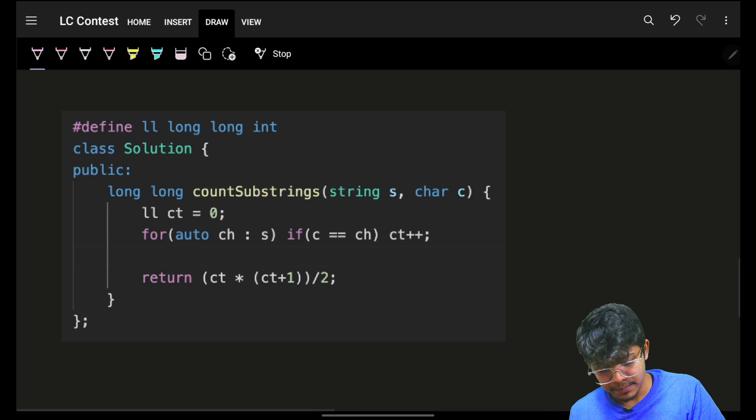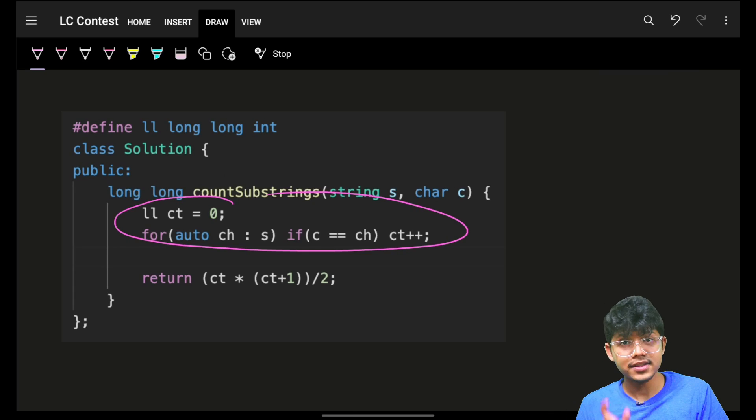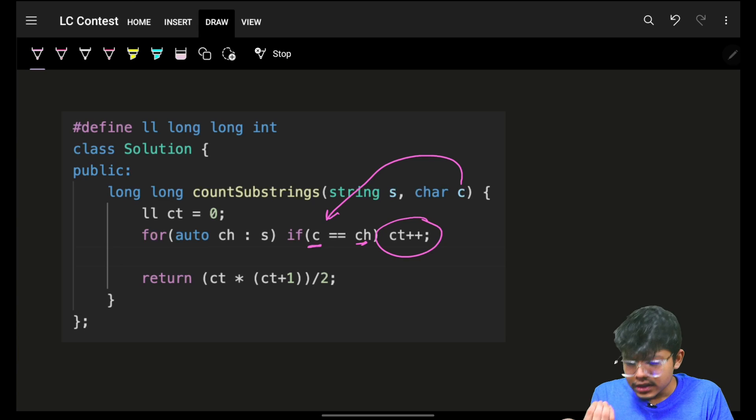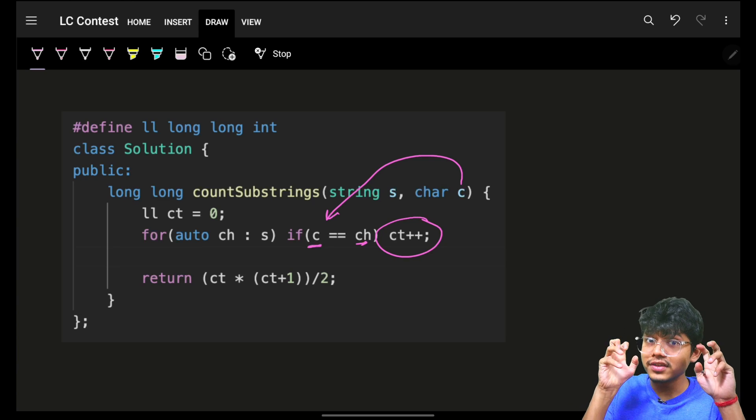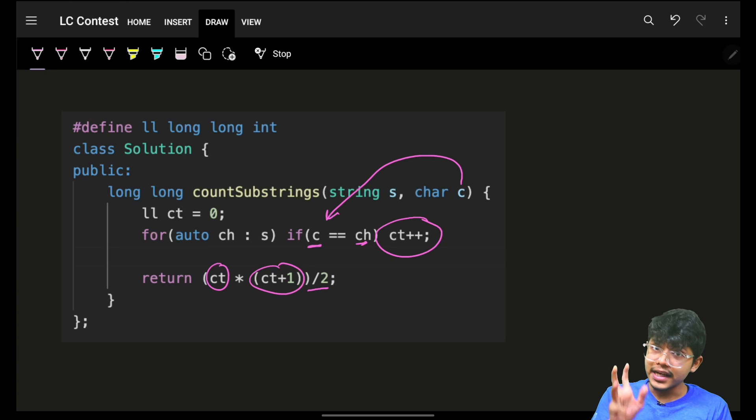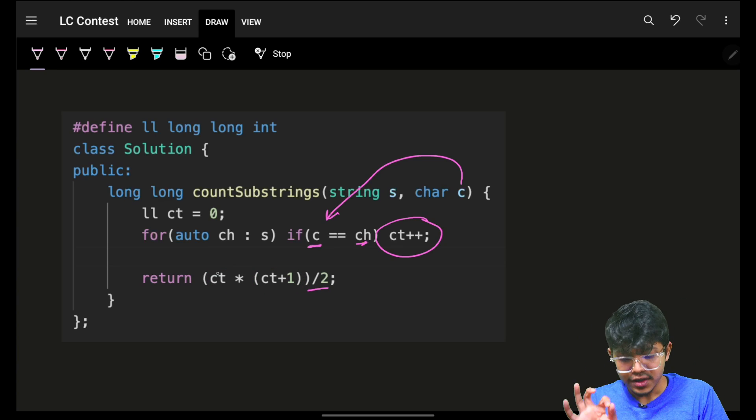So the code is very simple. That you will simply iterate on all the characters and check, okay, if the character you are iterating on is the character you wanted, then increase the count. And ultimately, I saw the actual case which we return is count into count plus one by two.